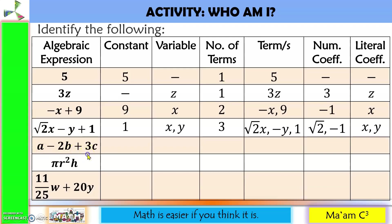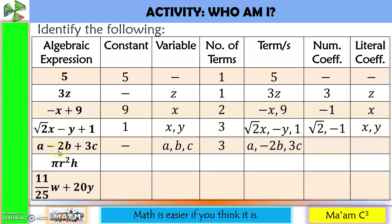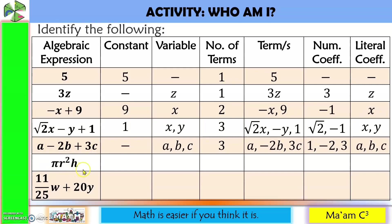Here we do not have a constant. Variables are a, b, and c. We have three terms: positive a, negative 2b, and positive 3c. Numerical coefficients are the invisible one (which is 1), negative 2, and positive 3. Literal coefficients are a, b, and c.